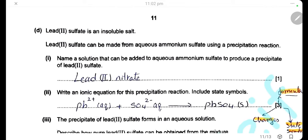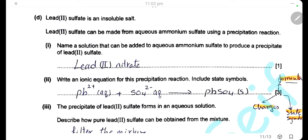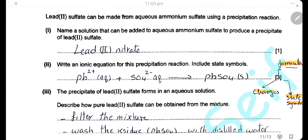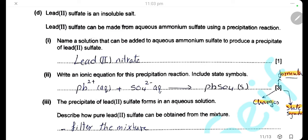Lead sulfate is an insoluble salt that can be made from aqueous ammonium sulfate using a precipitation reaction. We need a solution containing a soluble lead salt — for example, lead nitrate. The ionic equation for the precipitation is: Pb²⁺(aq) + SO₄²⁻(aq) → PbSO₄(s). This equation is worth 3 marks: one for the correct formula of lead sulfate, one for the correct charges on the ions, and one for the correct state symbols.